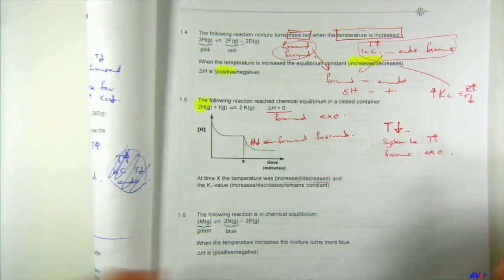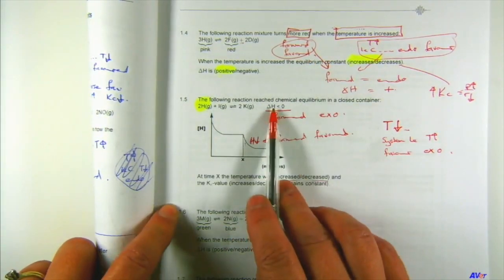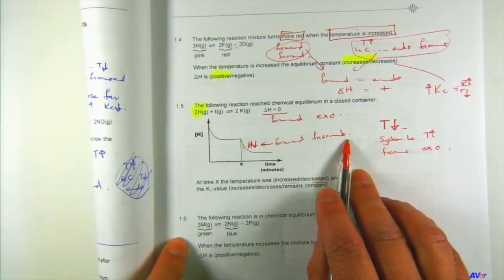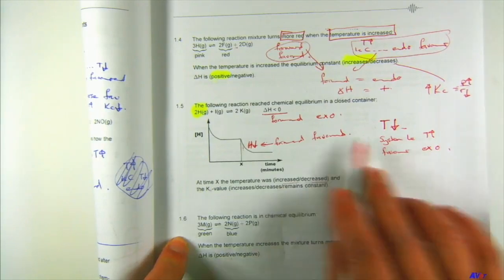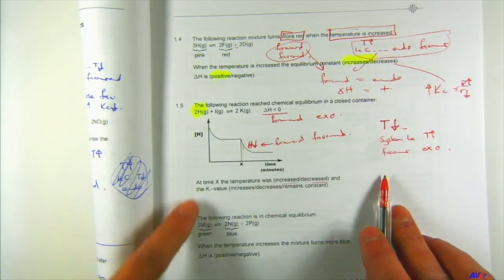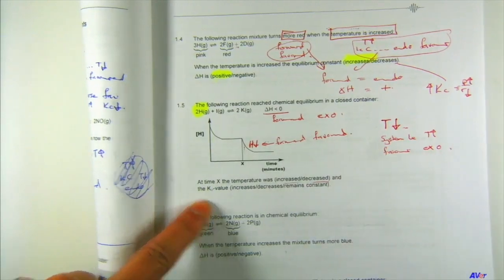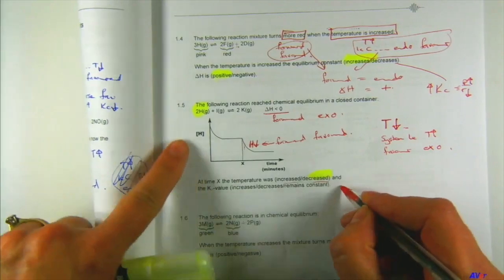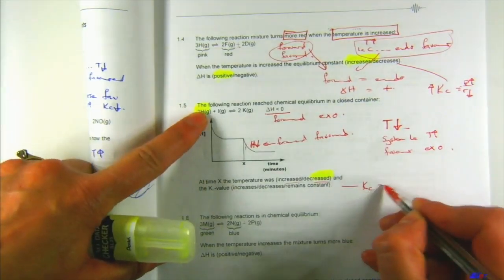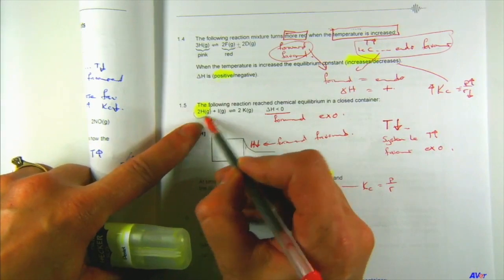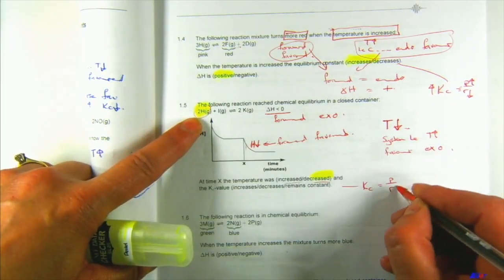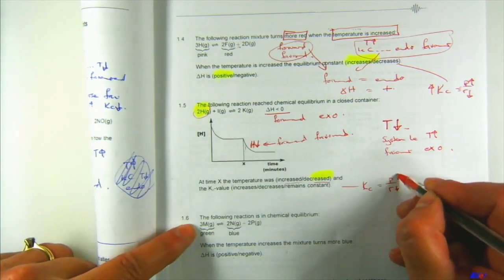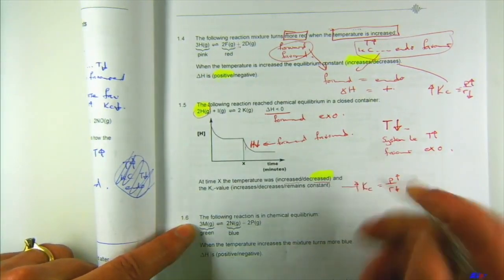That was difficult — you had to interpret delta H, then recognize that H decreasing means forward is favored, and the exothermic can only be favored by lowering the temperature. So the first answer was 'decrease.' Then for Kc: products over reactants. H is a reactant and it's decreasing, so obviously the products are increasing — Kc value increases.